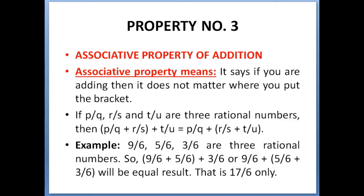Now property number three: associative property of addition. Associative means if you are adding, it does not matter where you put the bracket. If you have three or more rational numbers—suppose p/q, r/s, and t/u—then (p/q + r/s) + t/u will give you the same result as p/q + (r/s + t/u).